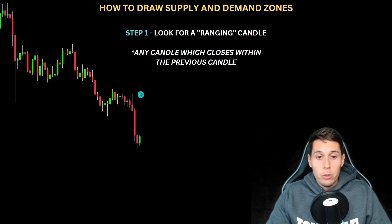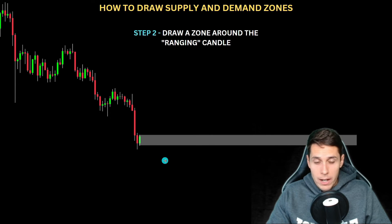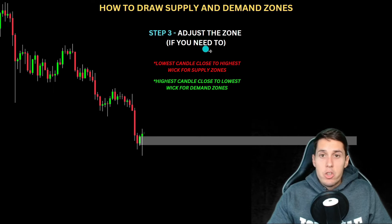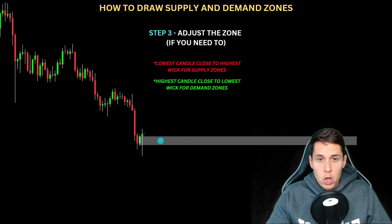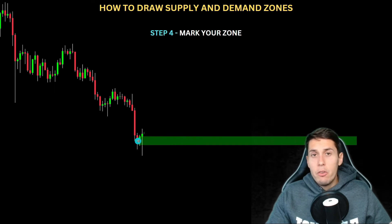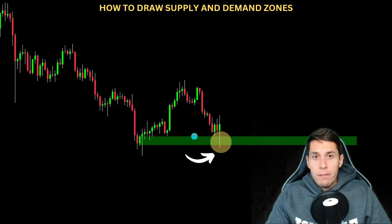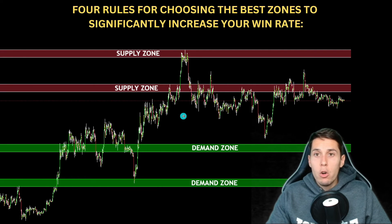Let me show you another example. Step number one: look for a ranging candle. This green candle is our ranging candle. Step number two: draw a zone around the ranging candle — take the whole candle. Step number three: adjust the zone if needed. In this case, the next candle already closed above the ranging candle, which means this is going to be a demand zone. You adjust the demand zone from the highest candle close to the lowest wick. Step number four: change the color of your zone — not always necessary, but useful for beginners. When price comes back to your zone, you can expect it to bounce, and that's what happened.